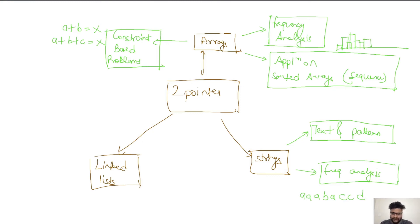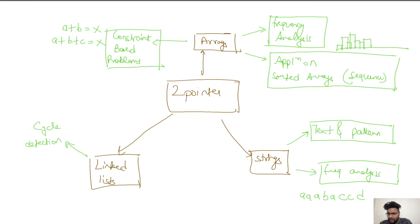In linked lists, there are very specific problem statements that can be solved by two pointers. The very first problem statement is around cycle detection — a very common problem where we have to detect a cycle in a linked list. There are also extended applications, such as finding the meeting point of the cycle, which we will solve in later sessions.